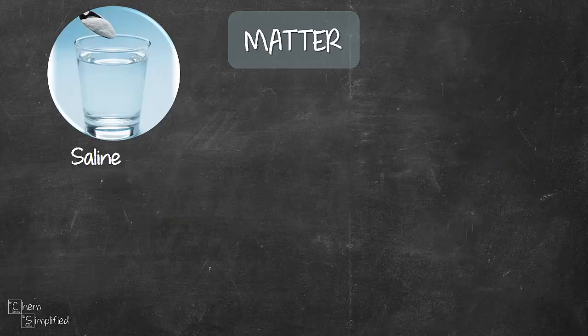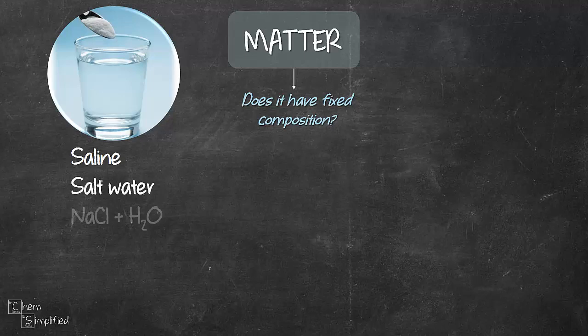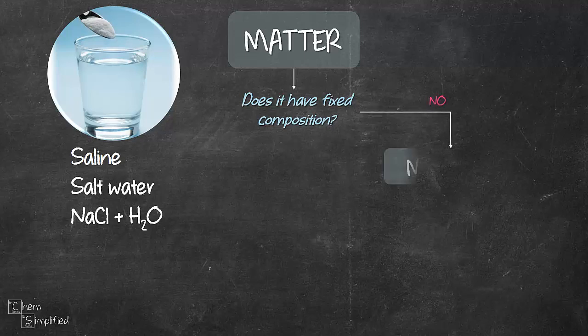Moving on. Saline. Does it have a fixed composition? Well, saline is actually salt water. It's a combination of NaCl plus H2O. So there's no exact formula for salt water. Meaning, salt water that is prepared by one person will differ from another person. So the ratio of NaCl to H2O is not fixed. It varies from person to person or from salt water to salt water. So therefore, it doesn't have a fixed composition. So it's a mixture.